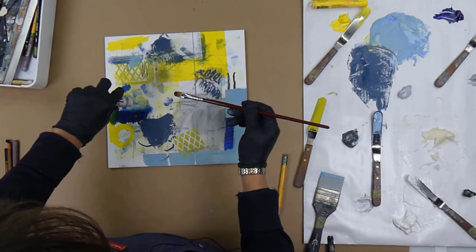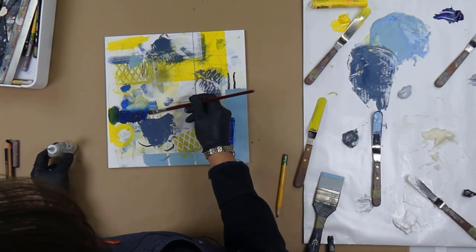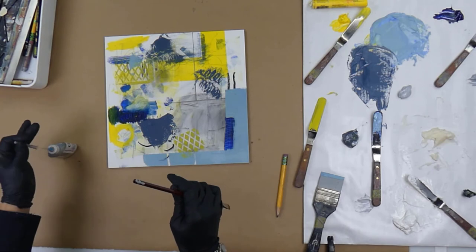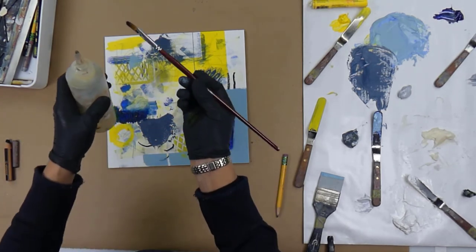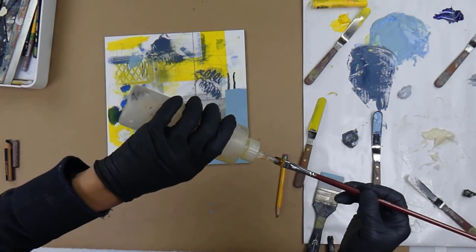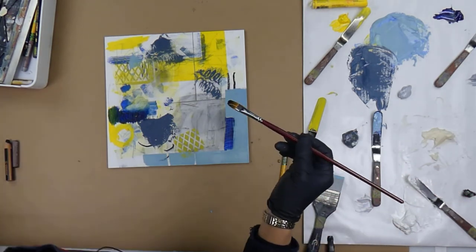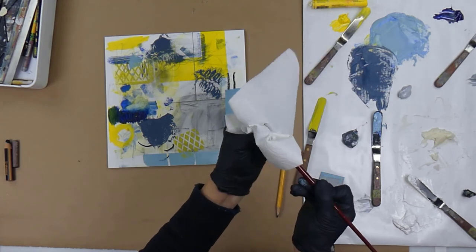To clean out your brush all you need to do is put a little bit of cooking oil on it like this here and then just get a paper towel and make sure that you get the paint out. It's not very hard but it's good to do it when you think about it because if you forget then it will dry.